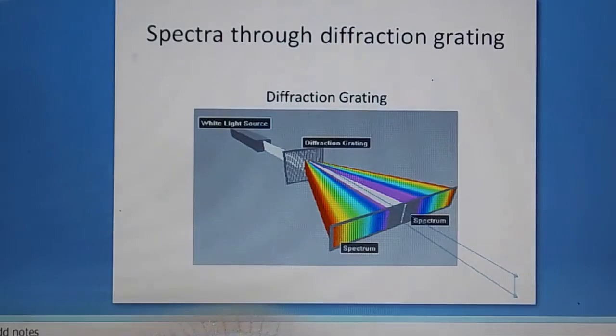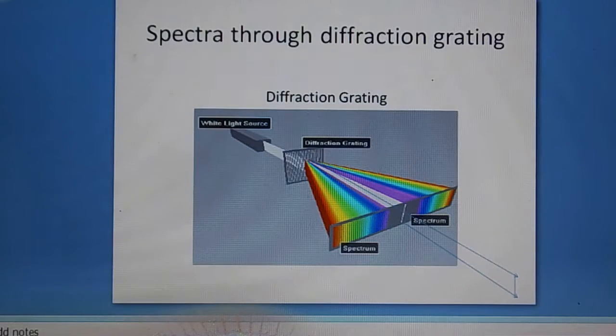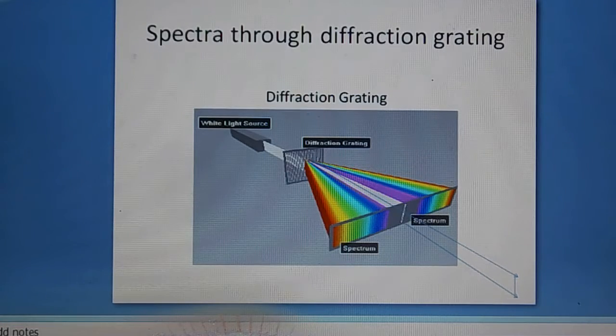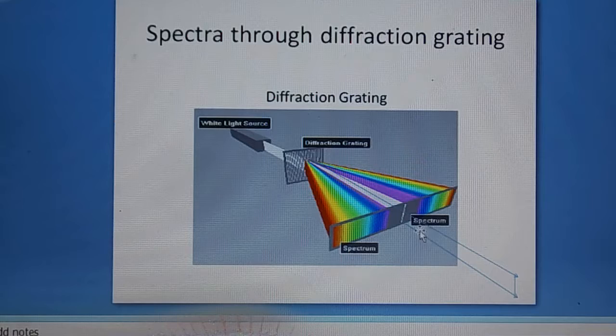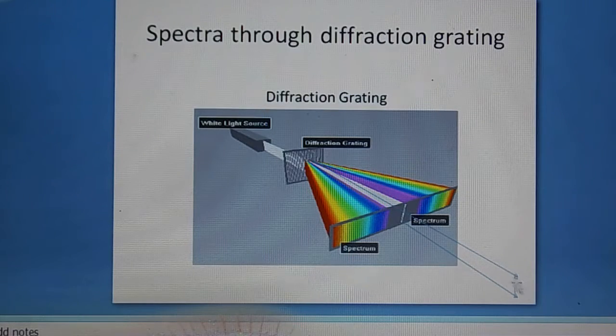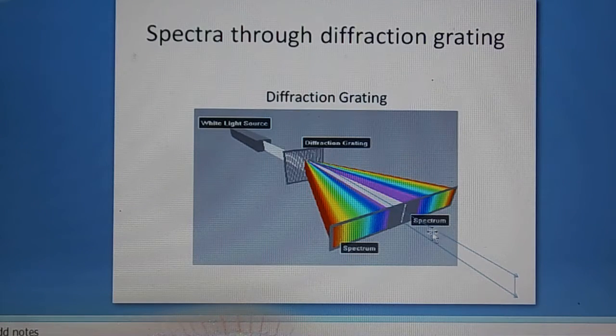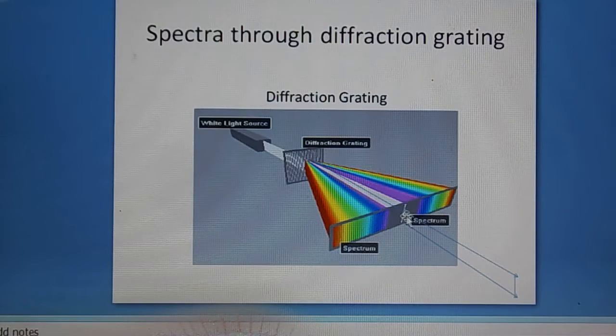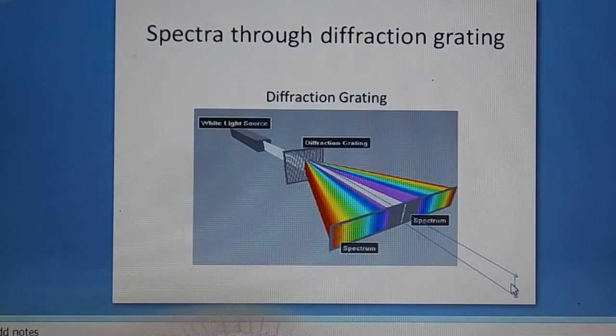We have seen diffraction grating through which the rainbow colors are produced by passing. The VIBGYOR colors on either side are produced just like a mirror image. Just assume that this is a mirror plane. Then you can see on both sides they are equally disposed. And various other designs can be created using diffraction.